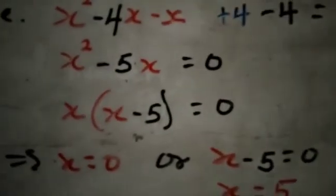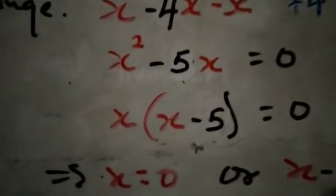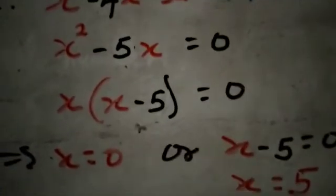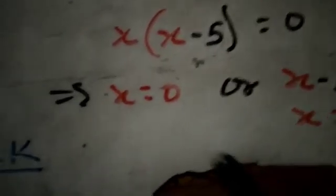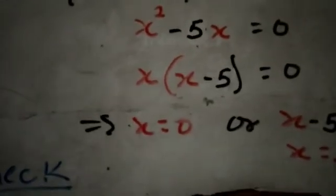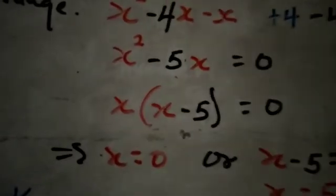Solving x² - 5x = 0 gives x = 0 or x = 5. However, we are not done yet — we have two values of x, so we must check which one satisfies the original condition. Substitute both back into the original equation and verify. Comment below whether x = 0 or x = 5 satisfies the condition.